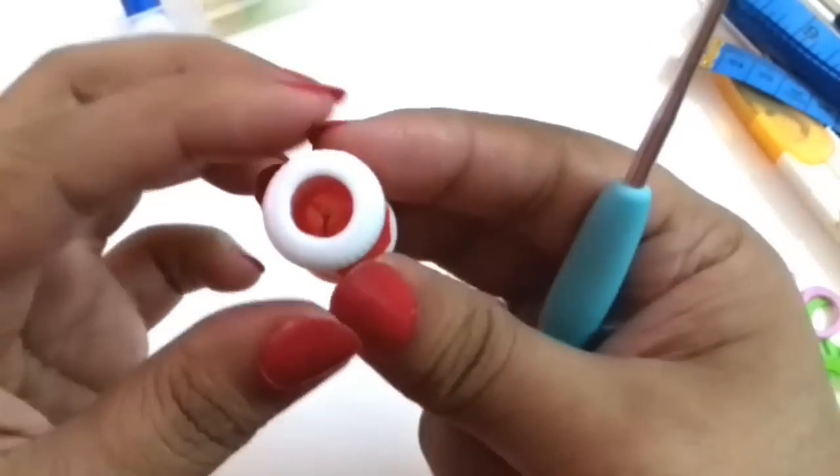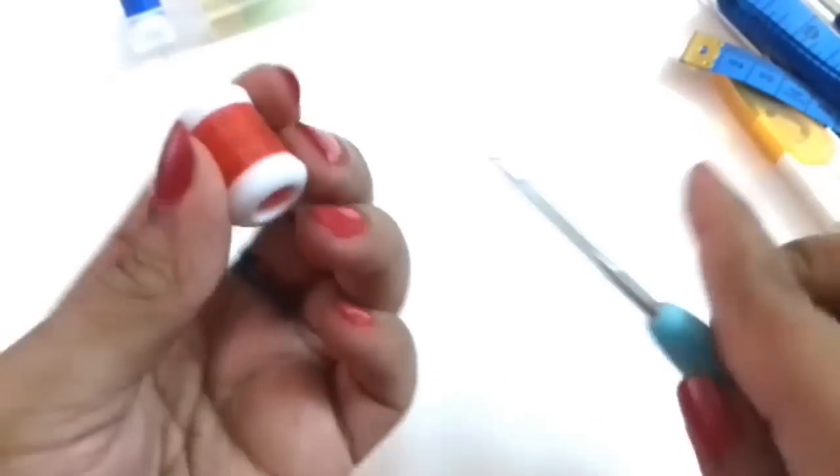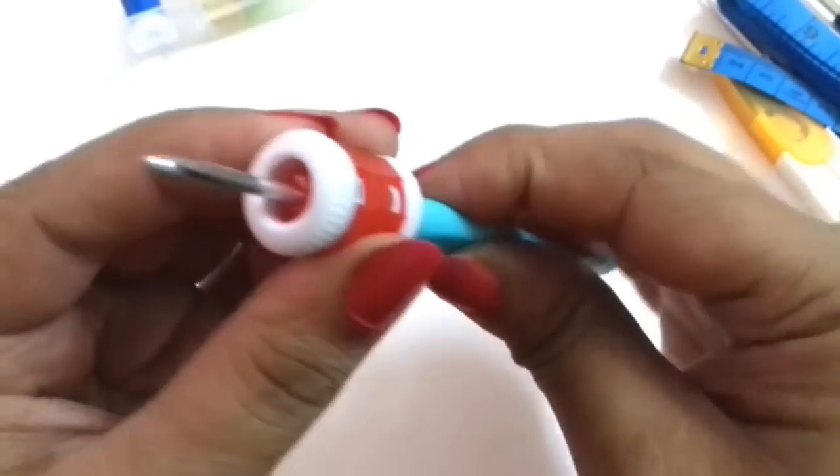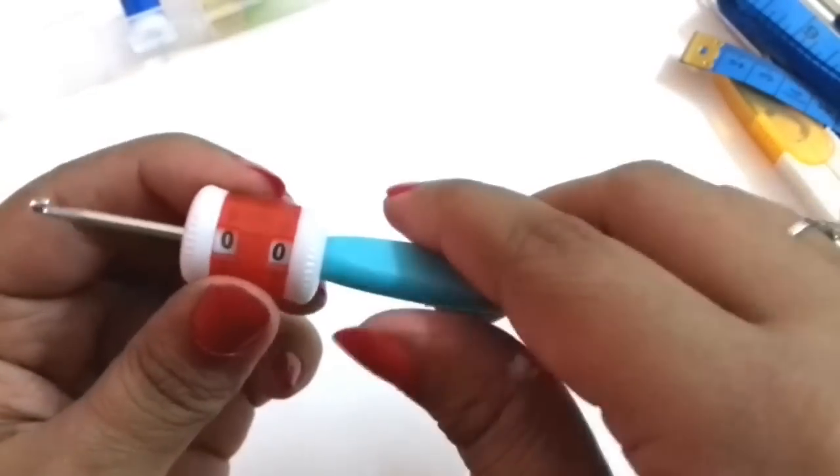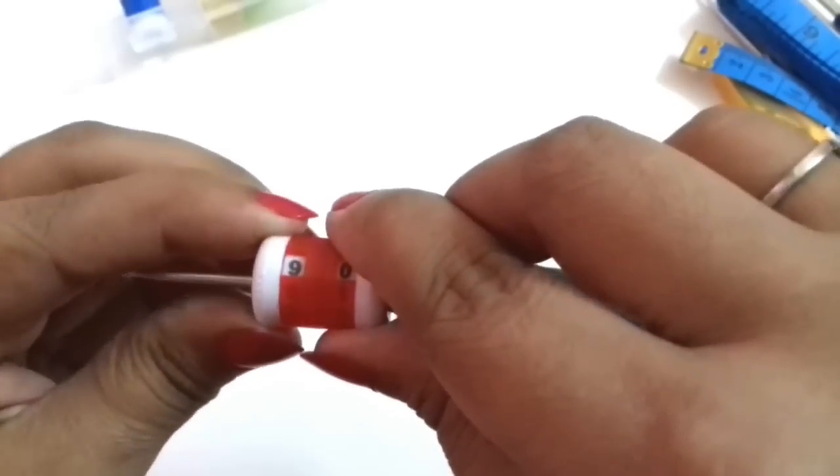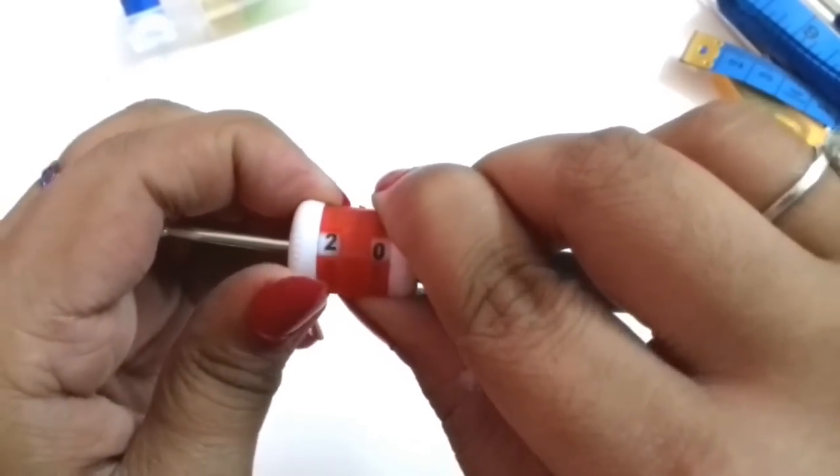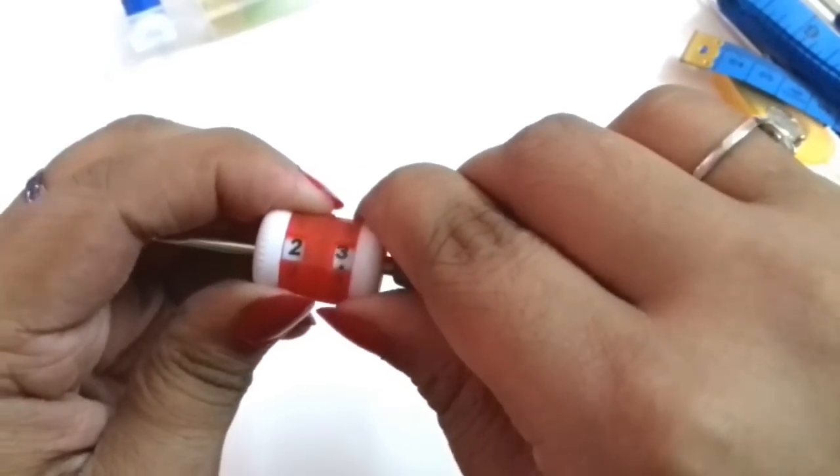Your crochet hook can easily fit in this, and sometimes you need to count rows. For crochet we need to count so this can be very useful. We can set whatever number of rows and no need to count manually, but we need to turn it after each row like this.